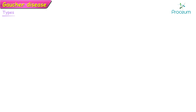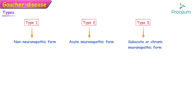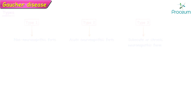There are several different types of Gaucher's disease: Type 1, Type 2, and Type 3. Type 1 is the non-neuronopathic form. Type 2 is the acute neuronopathic form. Type 3 is the subacute or chronic neuronopathic form of Gaucher's disease. Now let's dive deep into the pathogenesis of the disease.